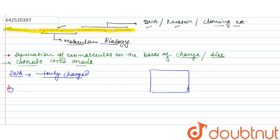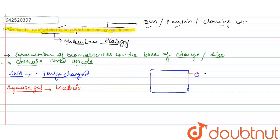This is very important. The agarose gel provides the matrix to run our RNA molecule or protein molecule. Suppose this is agarose gel — we need to prepare small wells on this gel. These wells are prepared by the comb. We load our DNA or protein into these wells.